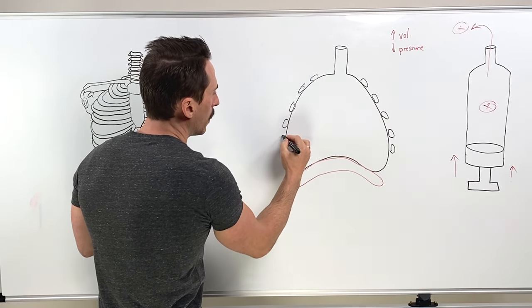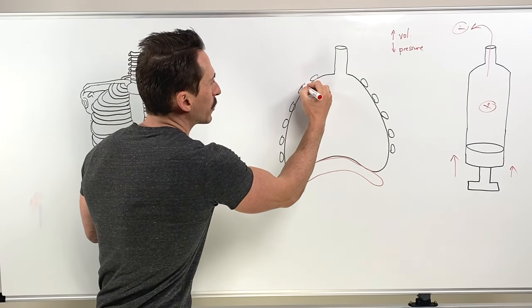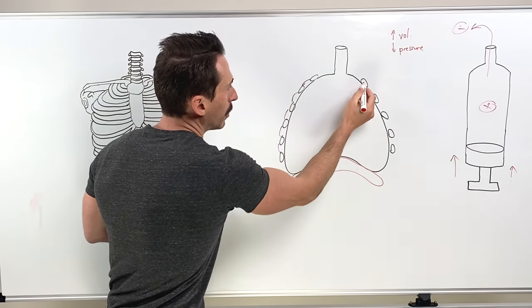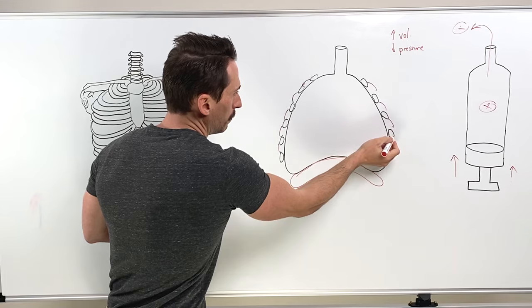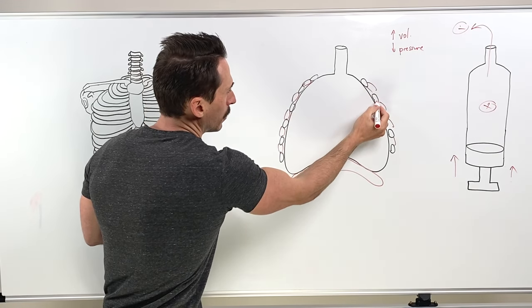And we're also going to have some ribs surrounding the thoracic cavity. And we know that there's muscles between these ribs. We've got the external intercostal muscles and the internal intercostal muscles.